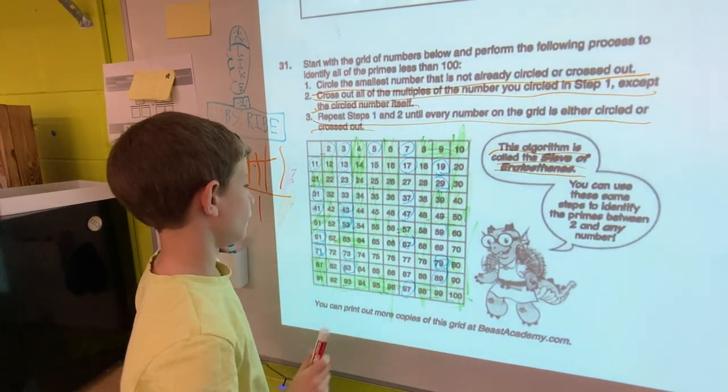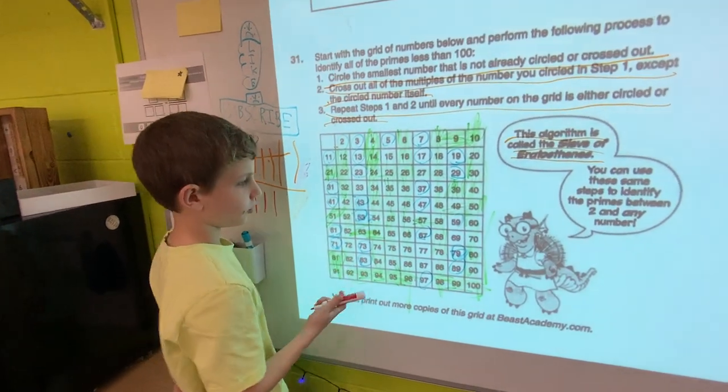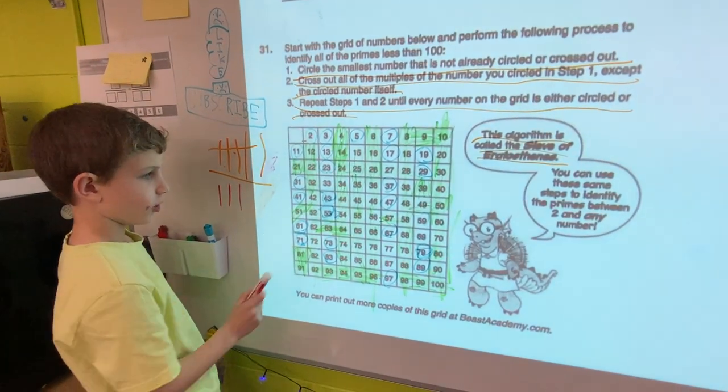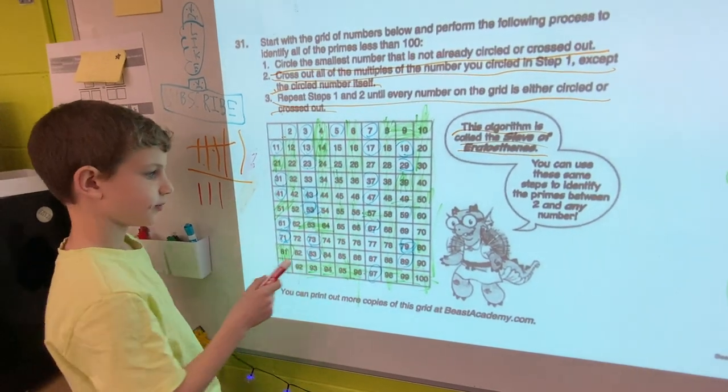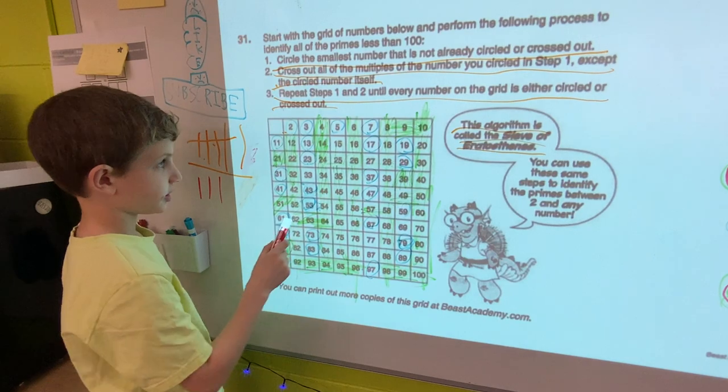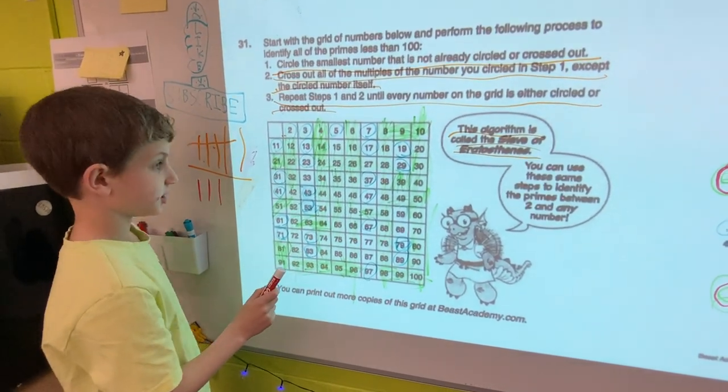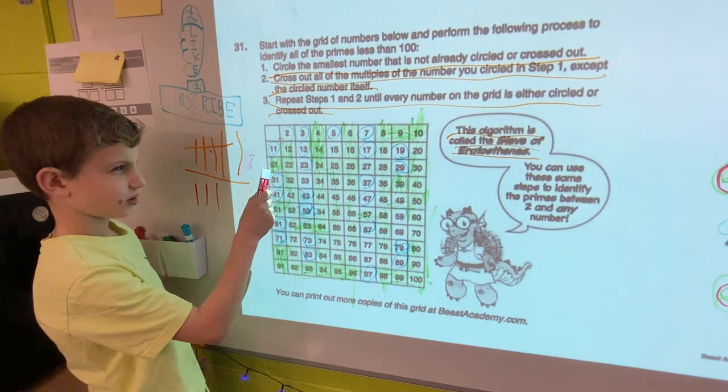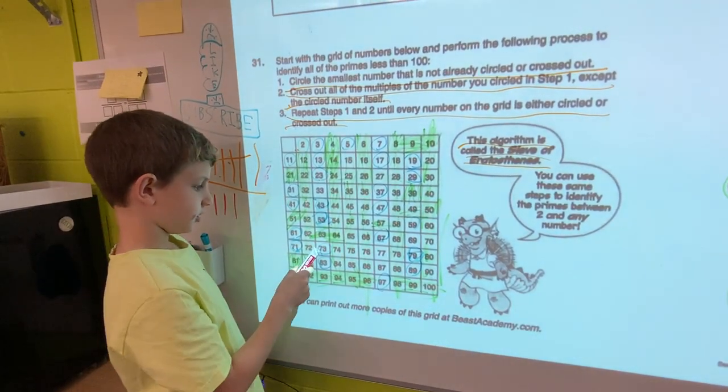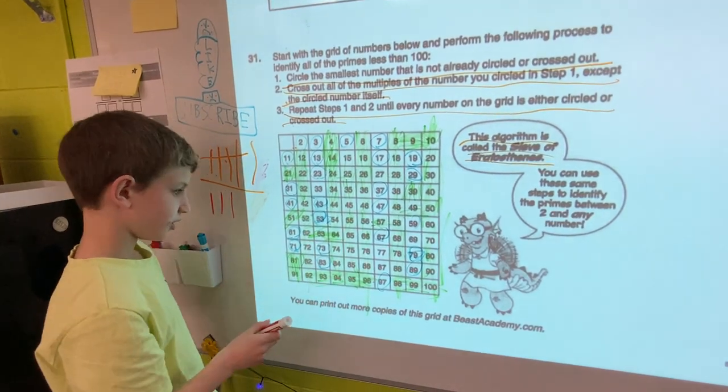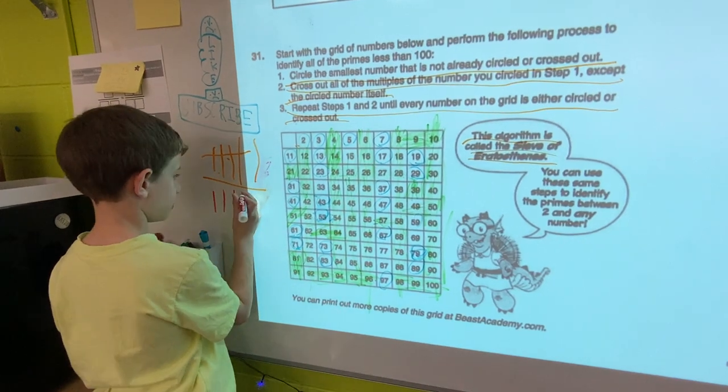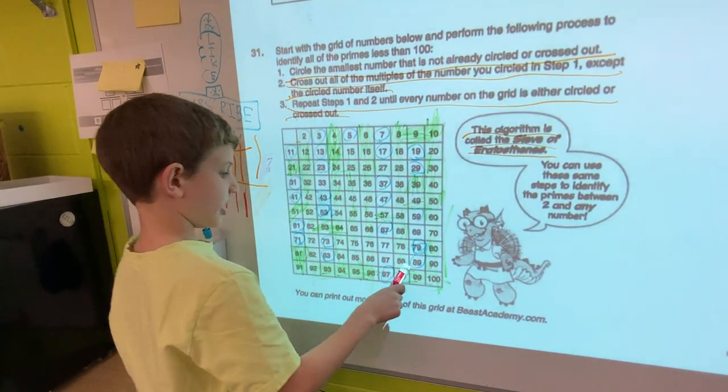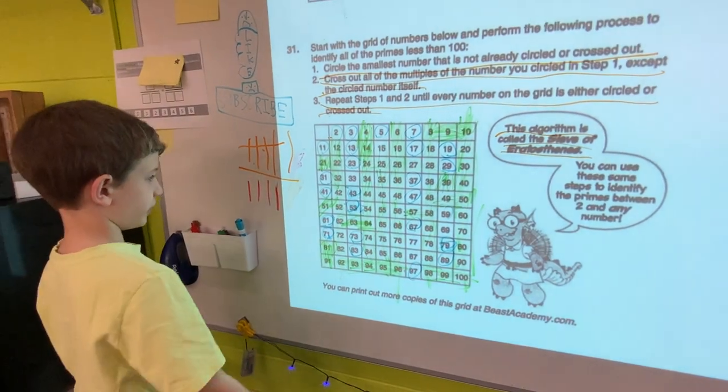Forty-one and fourteen, no. Forty-three and thirty-four, no. Forty-seven and seventy-four, no. Fifty-three and thirty-five, no. Fifty-nine and ninety-five, no. Sixty-one and sixteen, no. Seventy-one and seventeen, I think we already did that. Seventy-three and thirty-seven, we already did that. Seventy-nine and ninety-seven, yes. Ninety-seven and seventy-nine, we already did that.